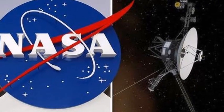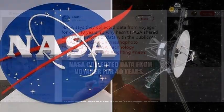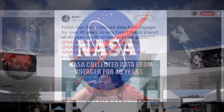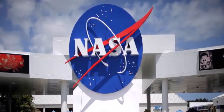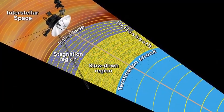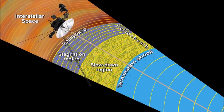NASA should allow the public real-time access to data beamed back by its oldest and farthest flung space probe, according to an alien investigator. Scott C Waring is convinced the US space agency is hiding something of significance, amid claims it is not being transparent enough with the data beamed back daily from the 40-year-old unmanned spacecraft which has left the solar system and is now in interstellar space.